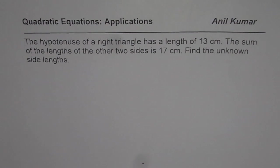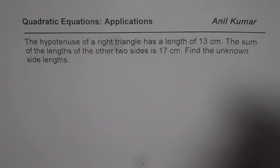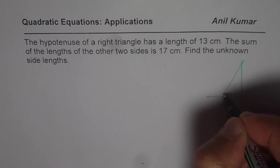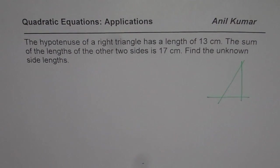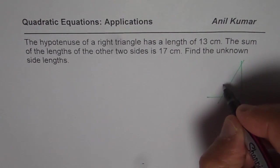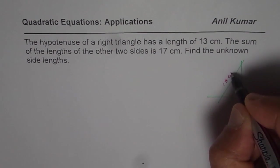So what we are given here is a right angle triangle. So let us sketch one right angle triangle. So let us say this is our right angle triangle. Now in this triangle, we are given that the hypotenuse is 13 centimeters. So this side is 13 centimeters.